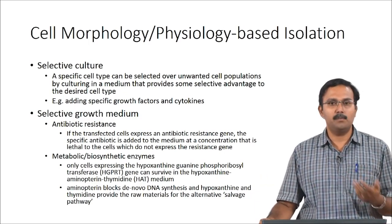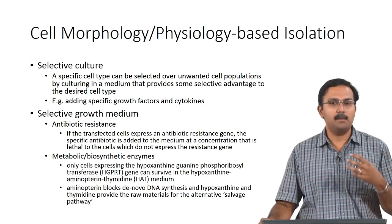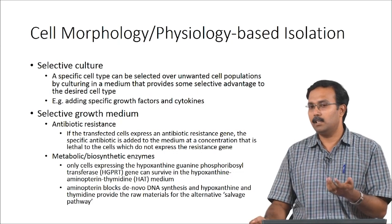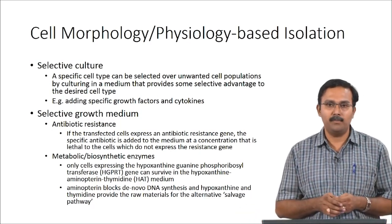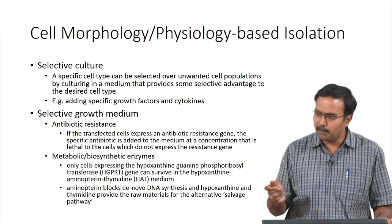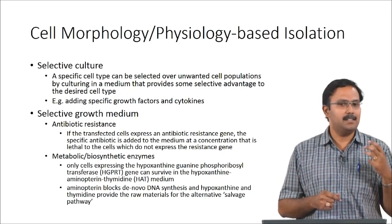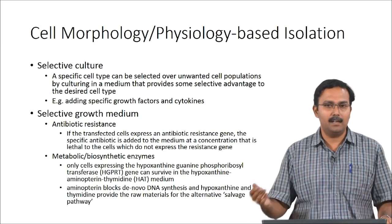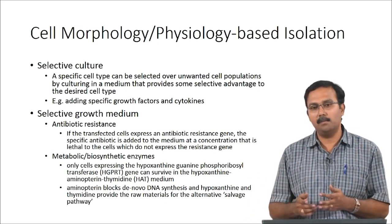Metabolic or biosynthetic enzymes can also be used for selective culture. If cells specifically express certain enzymes, media can be designed that only those cells can use — cells not producing the enzyme cannot utilize the media and die out. A common example is HGPRT (hypoxanthine-guanine phosphoribosyltransferase). Cells expressing this gene can take up HAT media; cells lacking it cannot and will die.